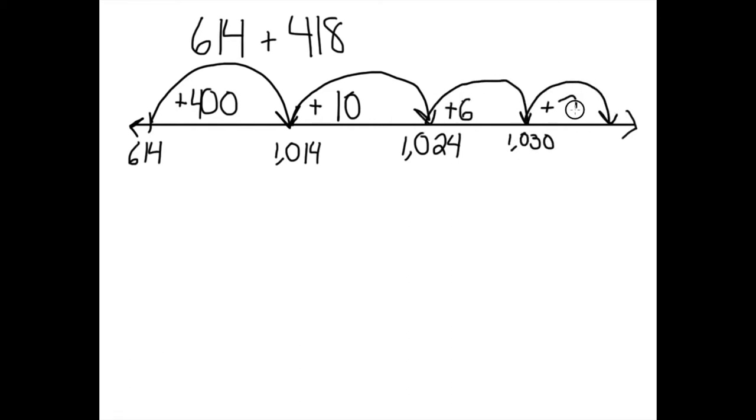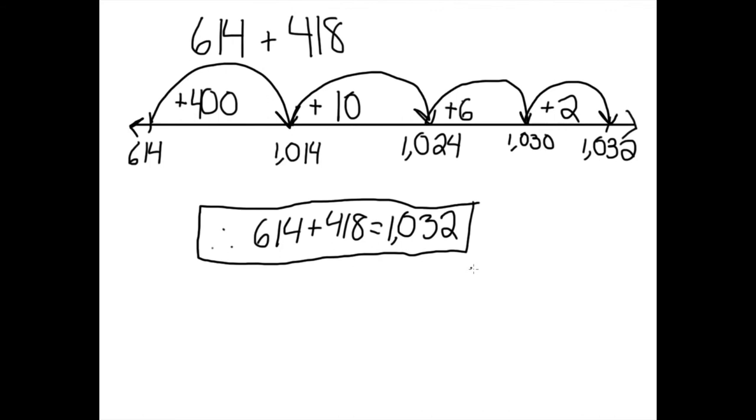Finally, we added 2, which brought us to 1,032 on our number line. That is how we chose to solve 614 plus 418 using an open number line. You can jump different units than we did, but we chose these units to make it easier to add in our heads. Thanks for watching.